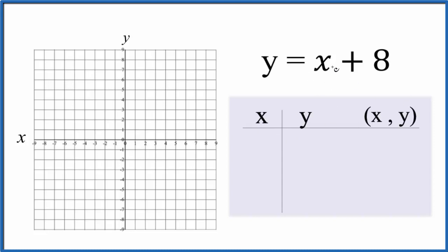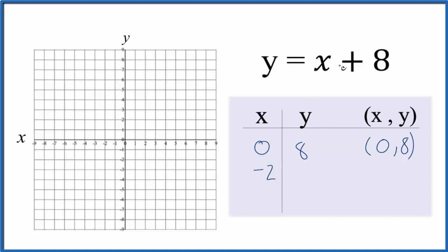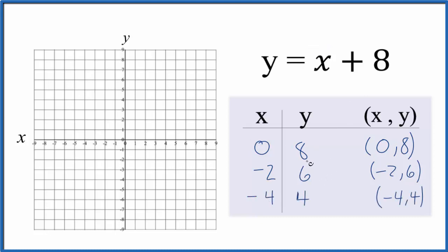Let's start by putting 0 in for x. 0 plus 8 is just 8. You can choose any values for x, but you want them to show up on the graph paper. So if I chose negative numbers, that would give me a smaller number than 8 — that would fit. So I'll say negative 2: negative 2 plus 8 gives me 6. How about negative 4? Negative 4 plus 8 is just 4. So these values will give me points on the graph.